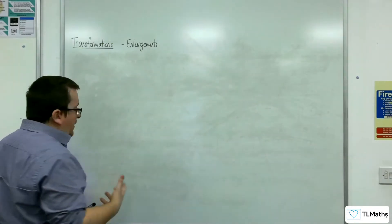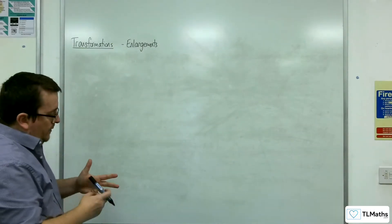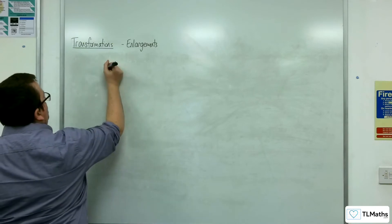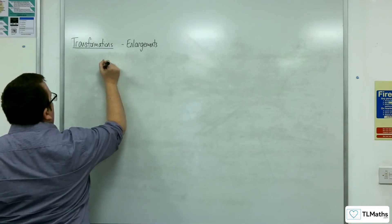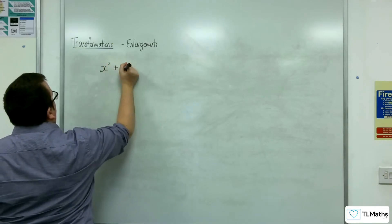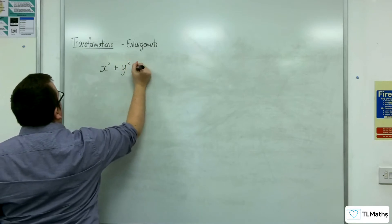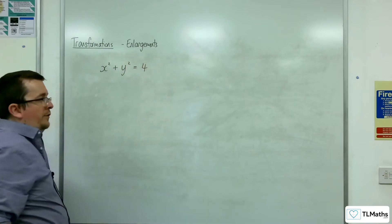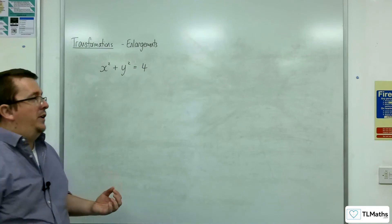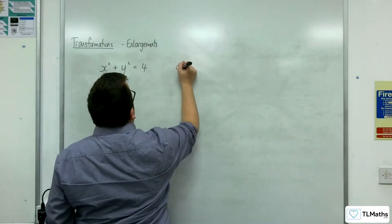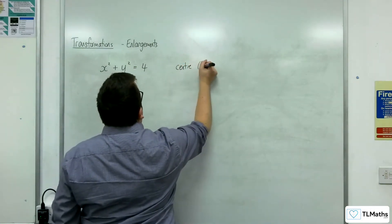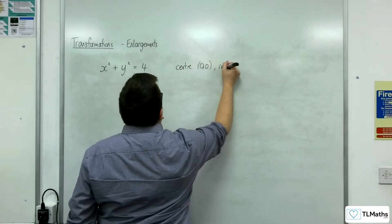For example, if you had the circle x squared plus y squared equals 4, this is a circle centred at the origin with radius 2.